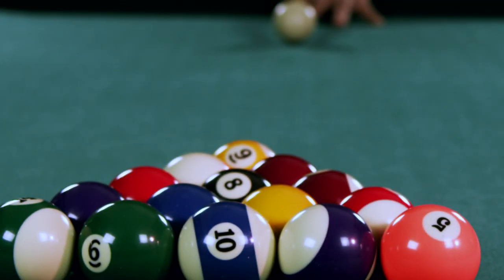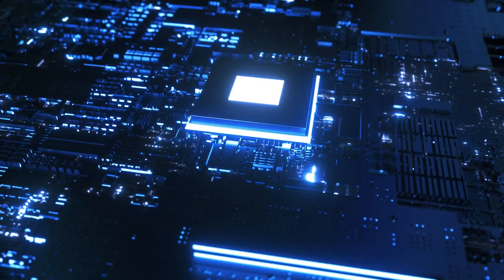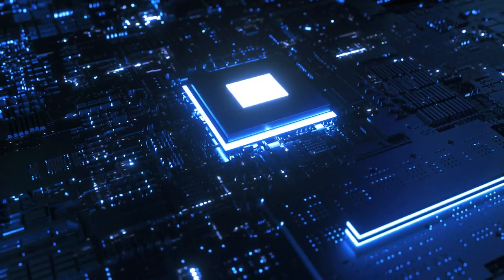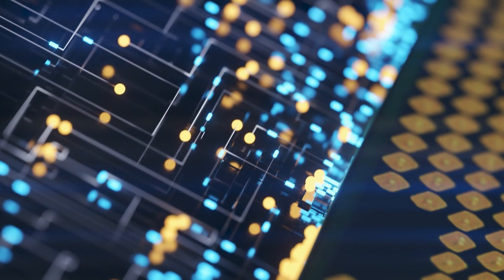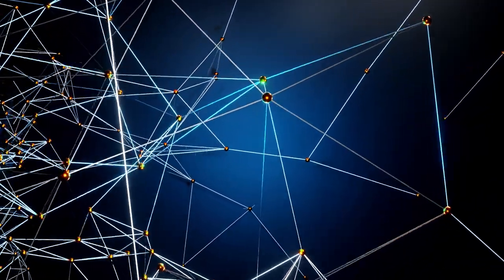Imagine this pool table being a computer chip that is smaller than a few nanometers, and these balls as electrons in that same computer chip. It is what quantum chaos looks like.